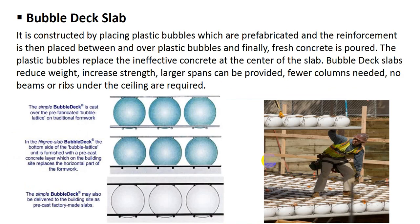Bubble deck slab. In this type of slab, plastic bubbles are placed inside the reinforcement. It is constructed by placing prefabricated plastic bubbles, with reinforcement placed between and over the plastic bubbles, and finally fresh concrete is poured. The plastic bubbles replace the ineffective concrete at the center of the slab. Bubble deck slab reduces weight, increases strength, allows larger spans, requires fewer columns, and no beams or ribs under the ceiling are required — making it very cost-efficient for large spans.